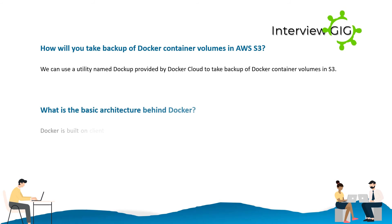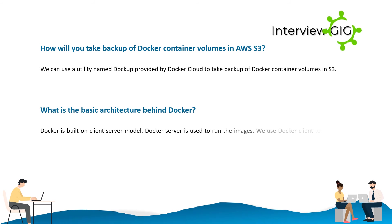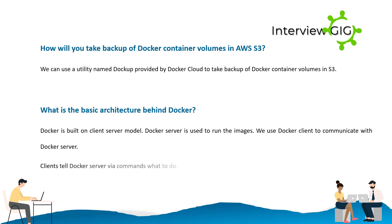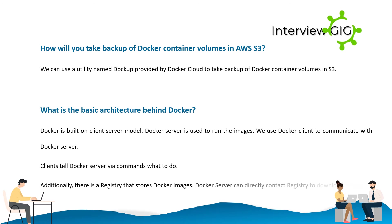What is the basic architecture behind Docker? Docker is built on a client-server model. Docker server is used to run the images. We use Docker client to communicate with Docker server. Clients tell Docker server via commands what to do. Additionally, there is a registry that stores Docker images. Docker server can directly contact the registry to download images.